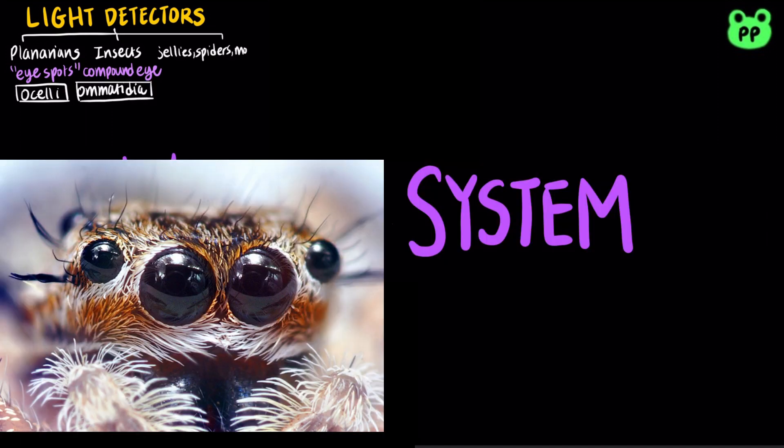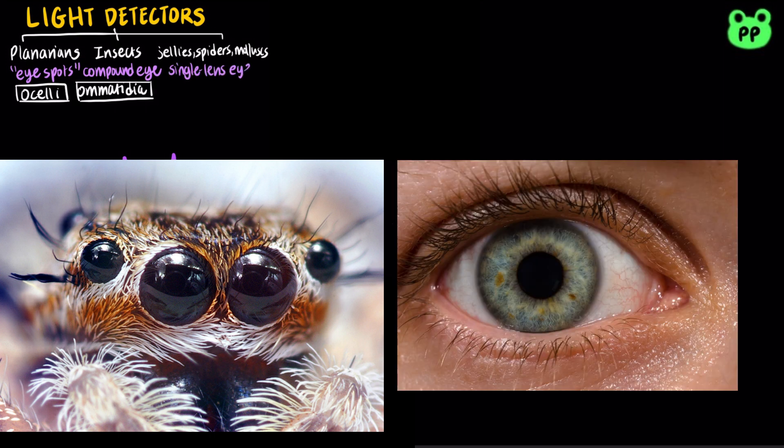Single lens eyes are found in some jellies, spiders, and many mollusks. Vertebrates and human eyes are also single lens eyes. They work on a camera-like principle.